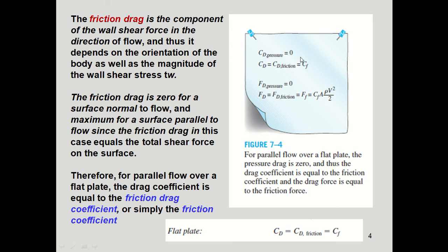The drag force is zero when the plate is perpendicular to the flow. When the plate is parallel to the flow, the drag force equals the frictional drag force. The frictional force equals the friction coefficient multiplied by area times ρV²/2. Therefore, for parallel flow over a flat plate, the drag coefficient equals the frictional drag coefficient, which is simply the friction coefficient C_f.